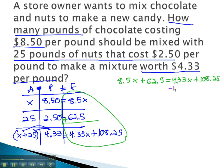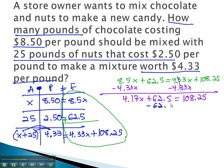Moving the variable to the same side by subtracting 4.33x will give us 4.17x plus 62.5 equals 108.25. Subtracting 62.5 from both sides gives us 4.17x equals 45.75.